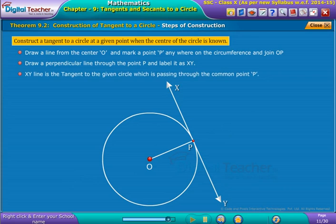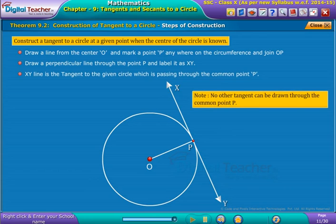XY line is the tangent to the given circle which is passing through the common point P. Note that no other tangent can be drawn through the common point P.